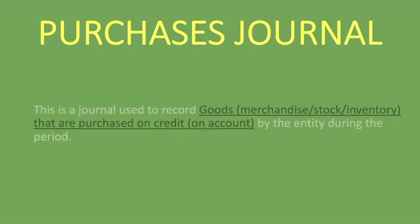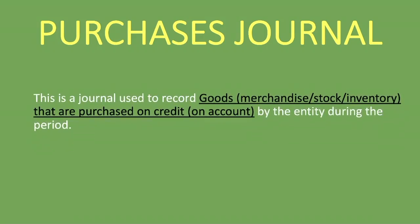So what is this journal all about? This is a journal used to record goods — which can be described as merchandise, stock, or inventory — so these are the goods that you sell in your ordinary course of business, that are purchased on credit or on account by the entity during the period.